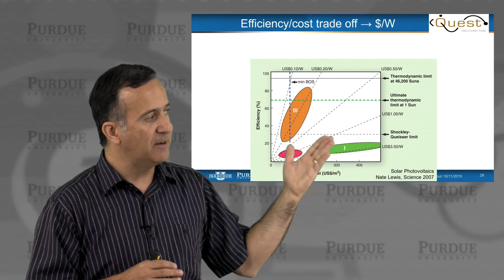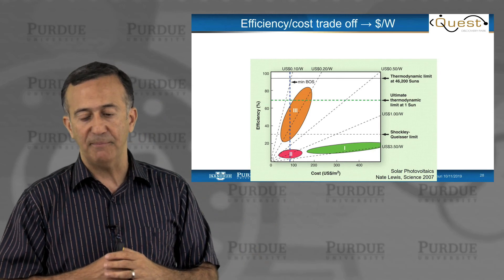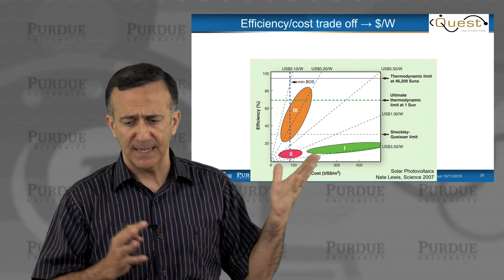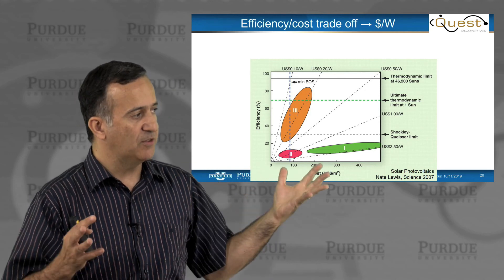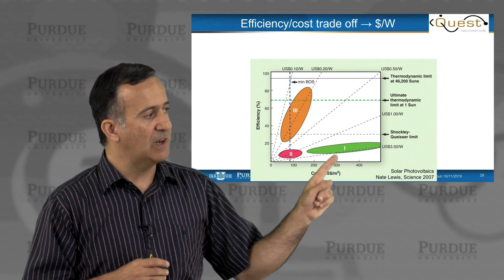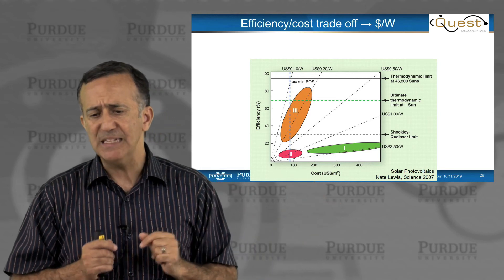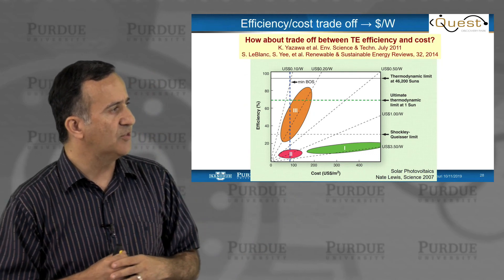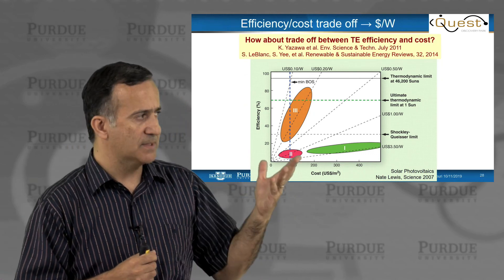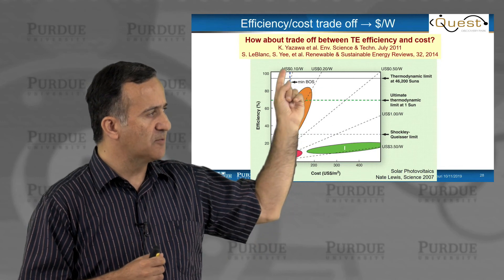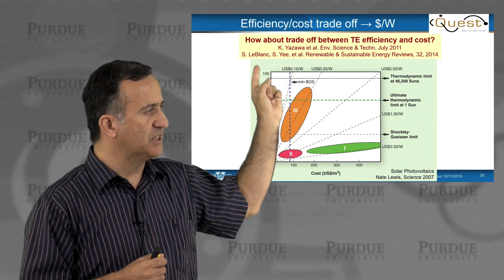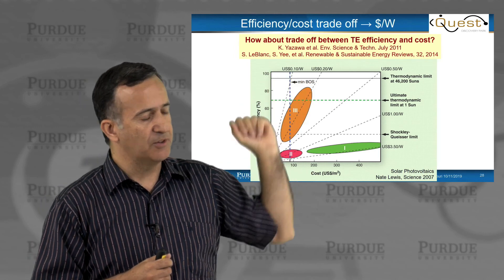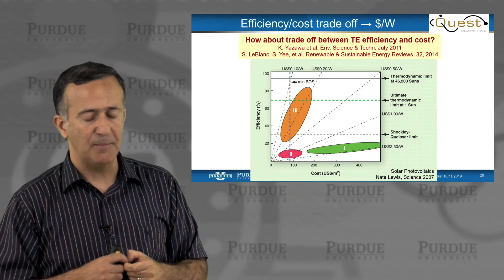This type of cost-performance trade-off that people in the photovoltaic field are familiar with — where there are always people trying to break efficiency records, and we need that understanding — but for market penetration, dollar per watt is important. This was actually missing in the thermoelectric field up to about 7–10 years ago. We had started this work with Kazia Zava. Later on, Sonia LeBlanc, Shannon Yee, and colleagues also had a very nice study summarizing some of these results.